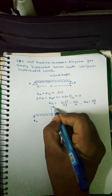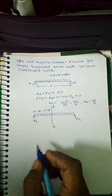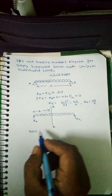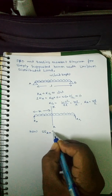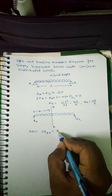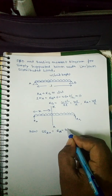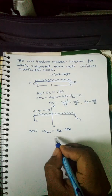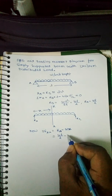Now we will take a section XX at a distance x from the left side. The shear force at section XX can be written as RA minus wx, which is wL/2 minus wx.